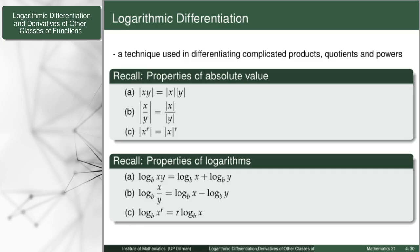There is a very big difference between how the properties are applied. However, both operators — the absolute value and the logarithm — have a relationship with products, quotients, and powers. Now, let's have an example on how this method works.